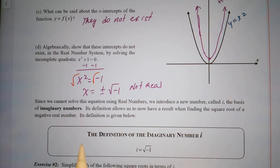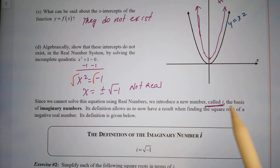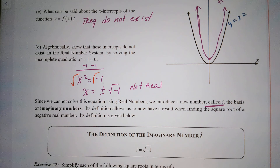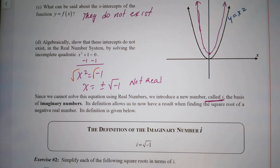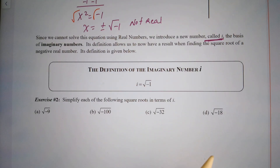Since we cannot solve this equation using real numbers, we introduce a new number called i. i is the basis of imaginary numbers. Its definition allows us to now have a result when finding the square root of a negative real number. So i is equal to the square root of negative one.